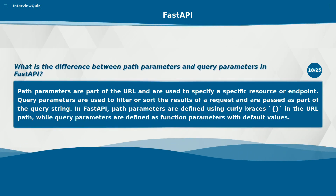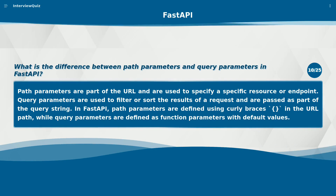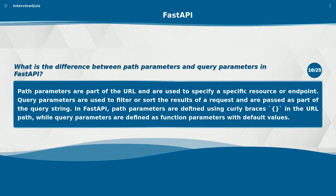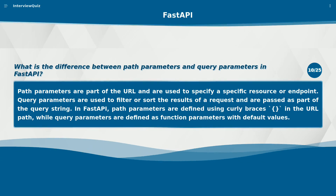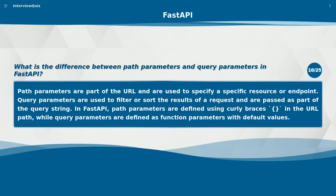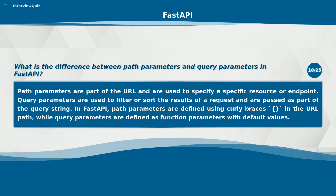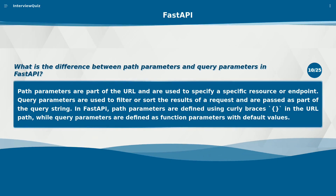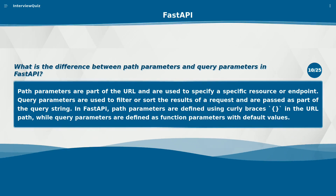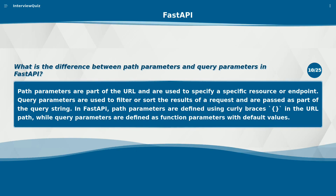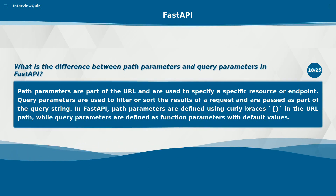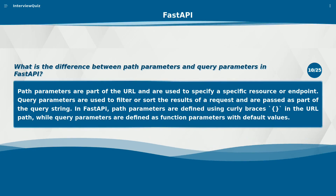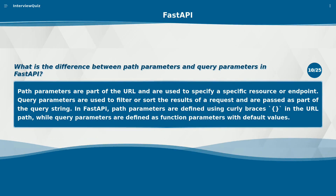What is the difference between path parameters and query parameters in FastAPI? Path parameters are part of the URL and are used to specify a specific resource or endpoint. Query parameters are used to filter or sort the results of a request and are passed as part of the query string. In FastAPI, path parameters are defined using curly braces in the URL path, while query parameters are defined as function parameters with default values.